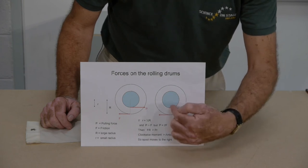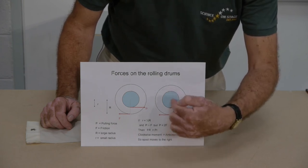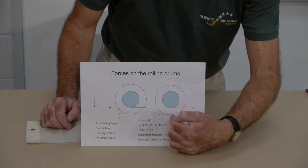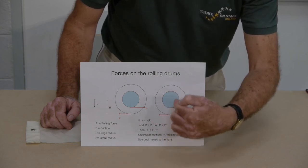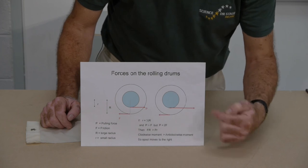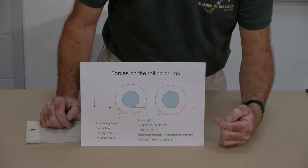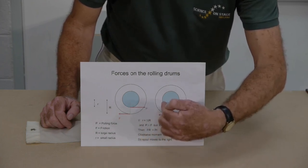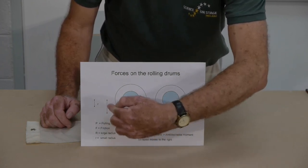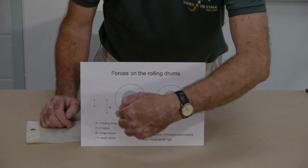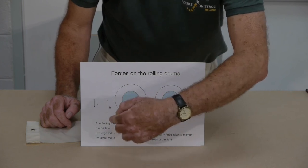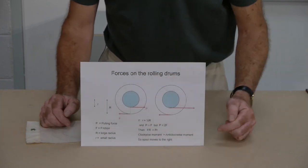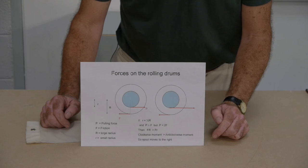The line of action of the pulling force is a short radius length from the axle of the drum, but the friction force is a longer radius length from the axle. The turning effect of the two forces are therefore different. If the pulling force is not too large and the friction force quite large, then the turning effect of the friction force exceeds the turning effect of the pulling force, and so the motion is against our instinct and follows the direction of the pull.